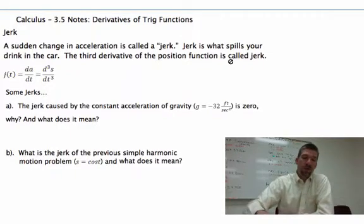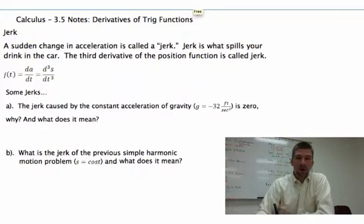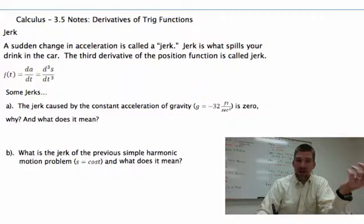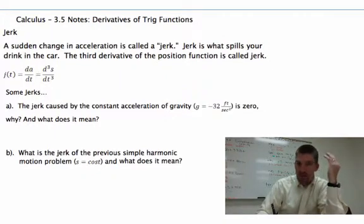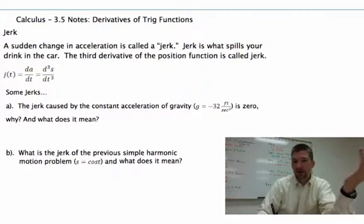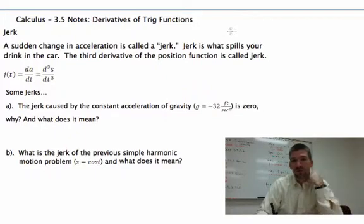So one of the things that's just kind of fun to look at is how a jerk works. And so if you think about gravity, okay, gravity has a constant acceleration of negative 32 feet per second squared. What about if we took the derivative of that? Now, remember, that is acceleration.